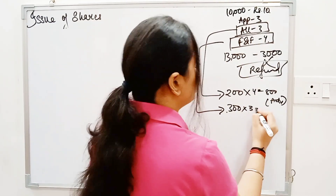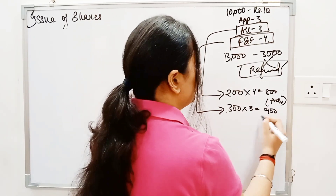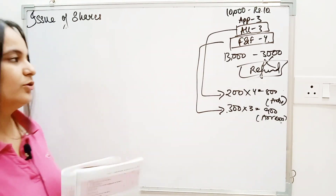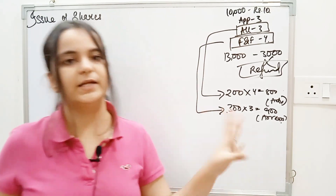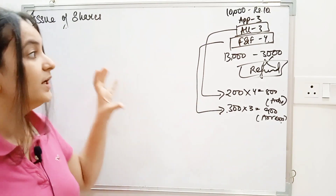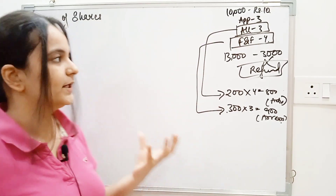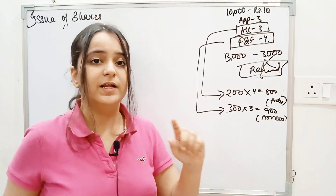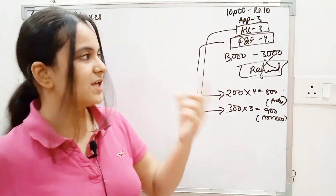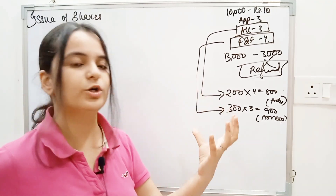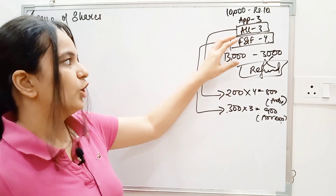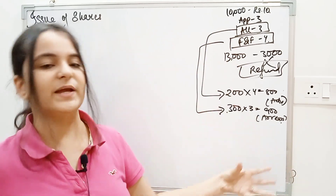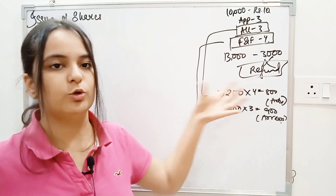So this is the case of calls in arrears. Generally, this means the shareholder did not pay at that time. We have seen many questions where allotment money was paid, but as always happens, the shareholder who doesn't pay allotment money — there are some calls on the other side — they pay for that particular call.